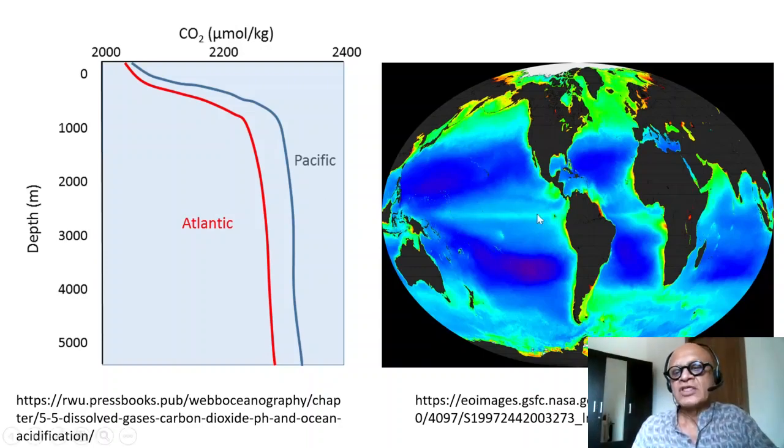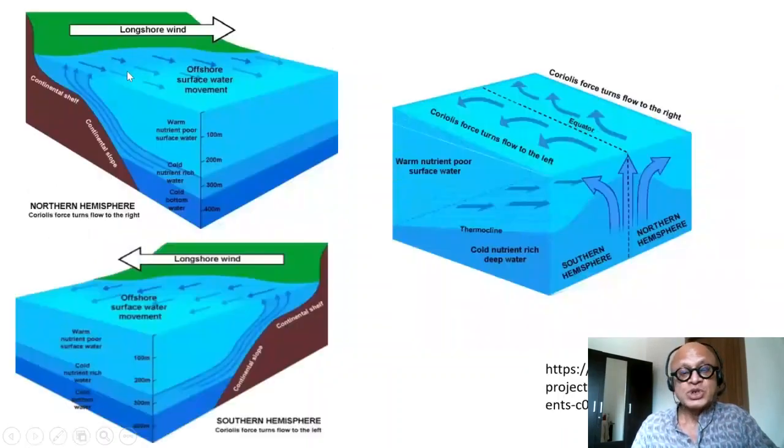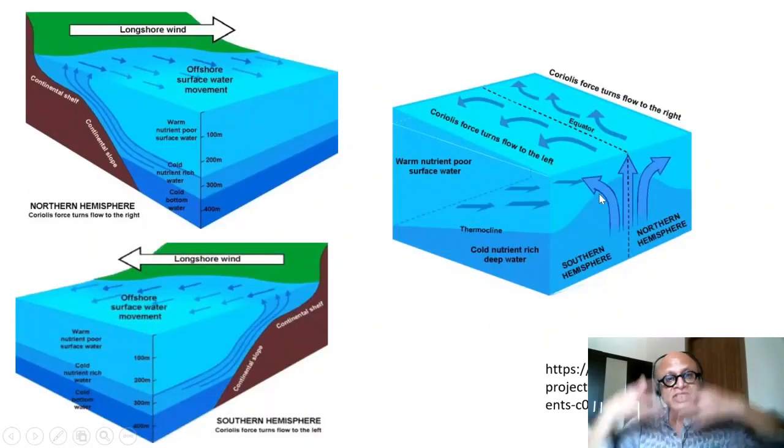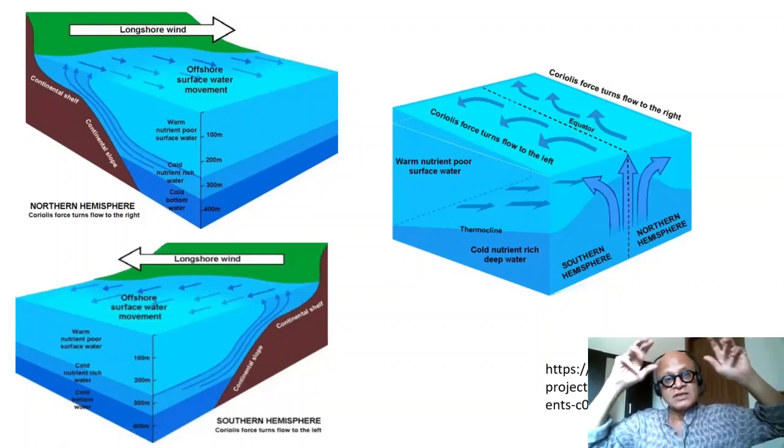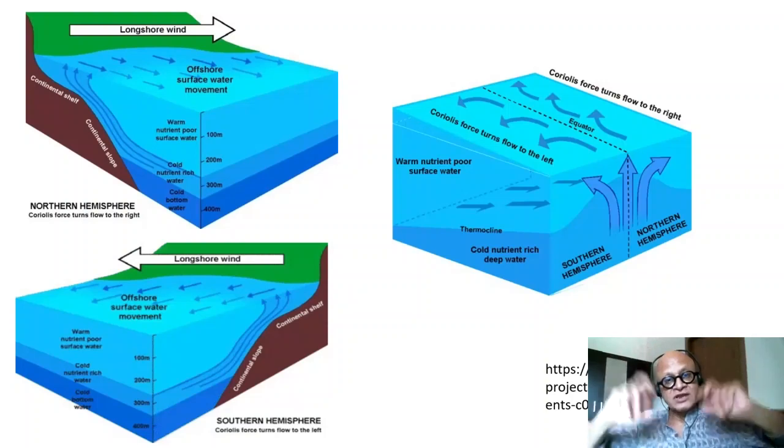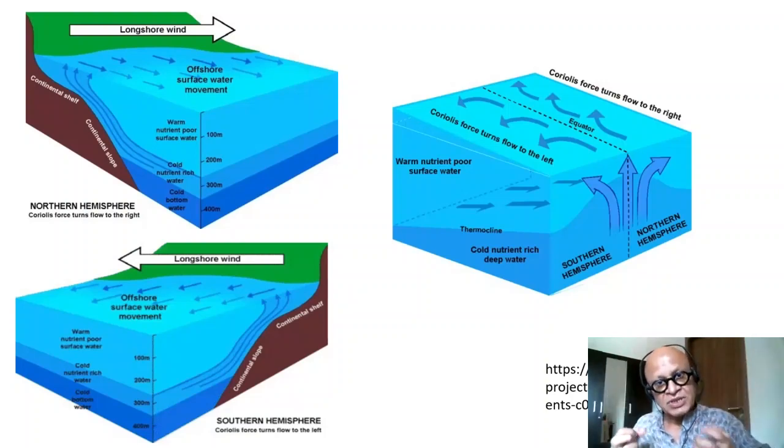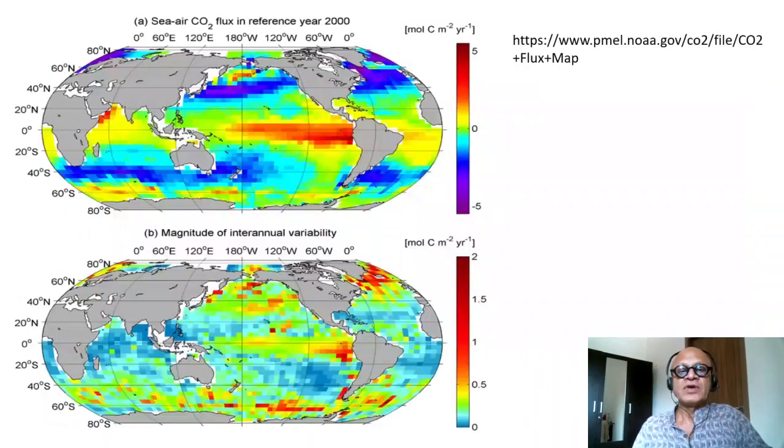This is of course going together with biological production which is trying to draw down the CO2. That's why CO2 is lower here. So it's always a question of whether it's the solubility pump driven by the upwelling and cold temperatures that controls the ocean pCO2 and the air-sea CO2 flux or whether it's the biological pump. Typically, very few places biological pump is strong enough to dominate the solubility pump.